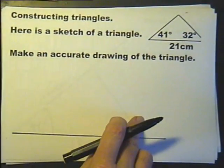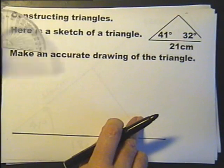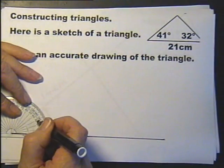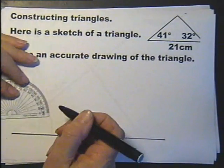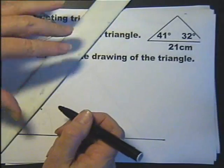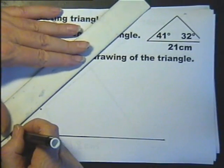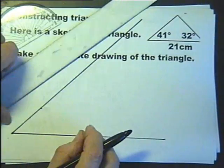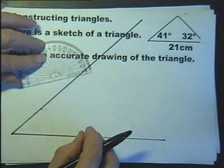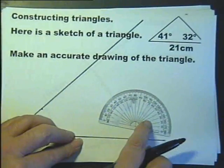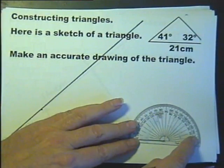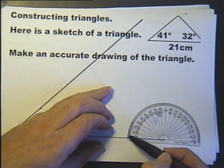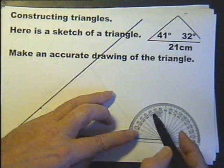And the protractor. 41 at that end, which is 0-10-20-30-40 there. Don't know how long it's got to be, so you just draw some sort of length. And then 32 at the other end. And remember how I do it, I actually count it round rather than just go and look in. 10-20-30-32.